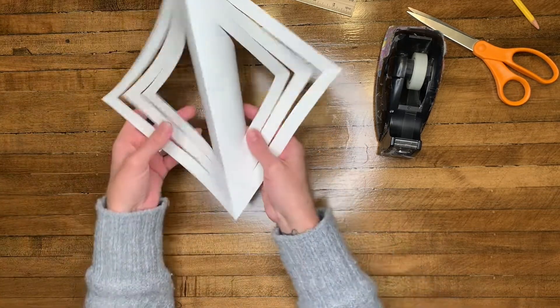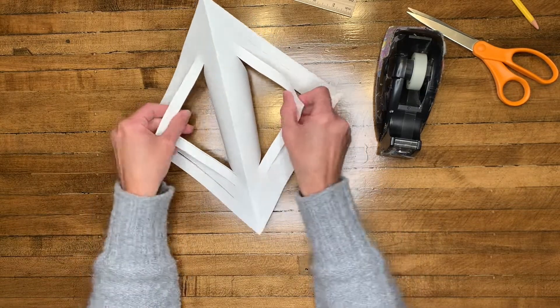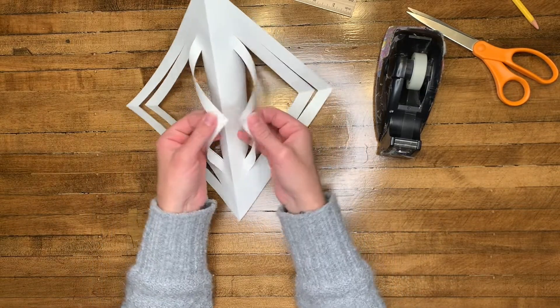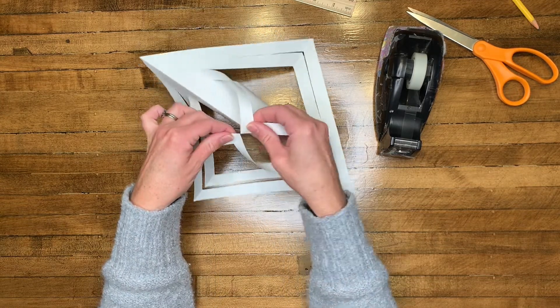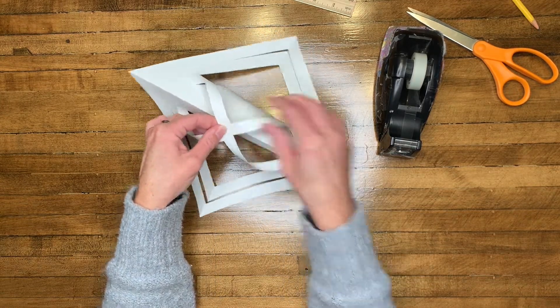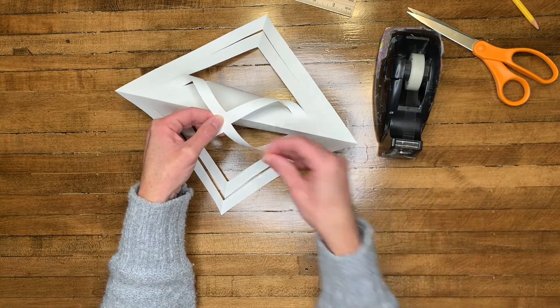Then flip your entire piece of paper over. Take the next rows of paper, overlap the points. Make sure they're not touching, but overlapping. And then take a really small piece of tape and tape those points together.